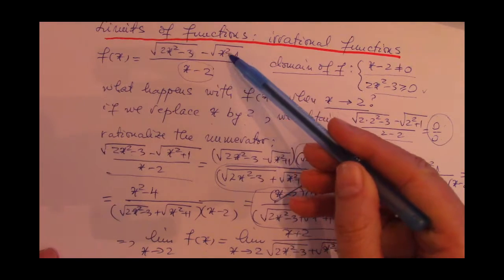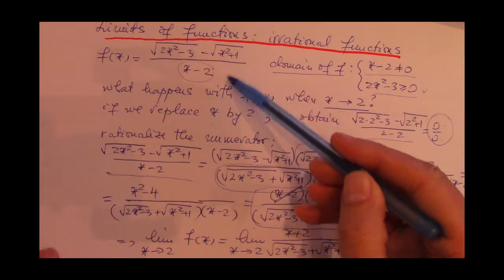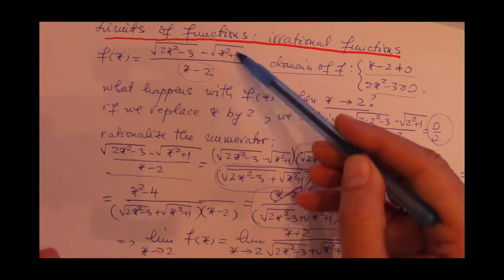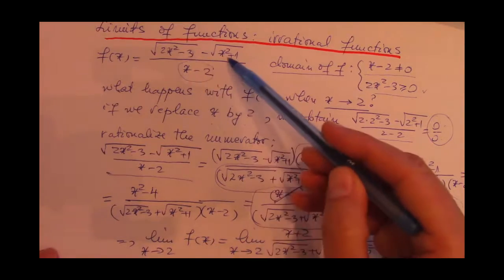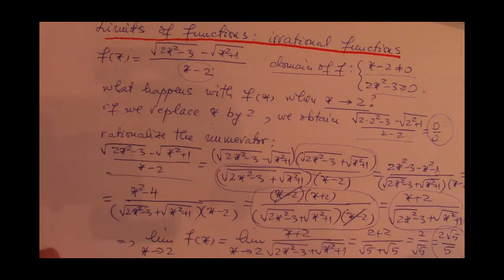So one way of computing limits, especially when the indeterminate case is 0 over 0 and one or both of the numerator and denominator involved in this fraction are irrational functions, is by amplifying with the conjugate.